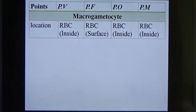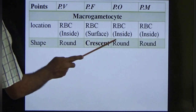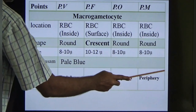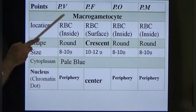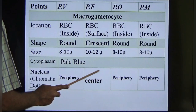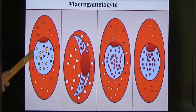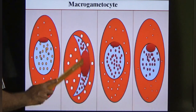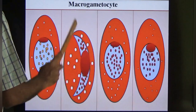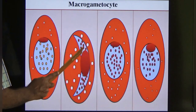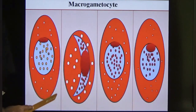For macrogametocytes, nothing much is different — location and shape (crescentic in falciparum, round in others) are the same. The key difference from microgametocytes: in vivax, ovale and malariae the nucleus is at the periphery, but in falciparum the nucleus stays in the center for both micro and macrogametocytes. This nucleus position differentiates male (center) from female (periphery) — except in falciparum where both remain in the center.